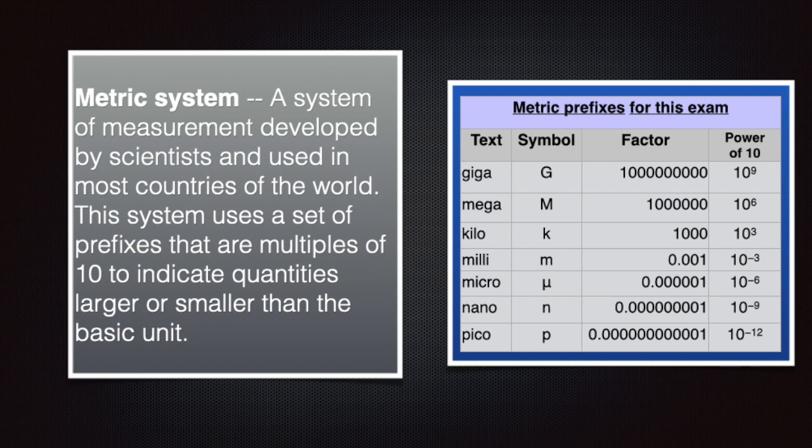Some of the metric prefixes for this exam are: G for Giga, which is 10 to the 9th power; capital M for Mega, which is 10 to the 6th power; k for Kilo, which is 10 to the 3rd power; lowercase m for milli, which is 10 to the minus 3rd power; the mu symbol for micro, which is 10 to the minus 6th power; and n for nano, which is 10 to the minus 9th power.